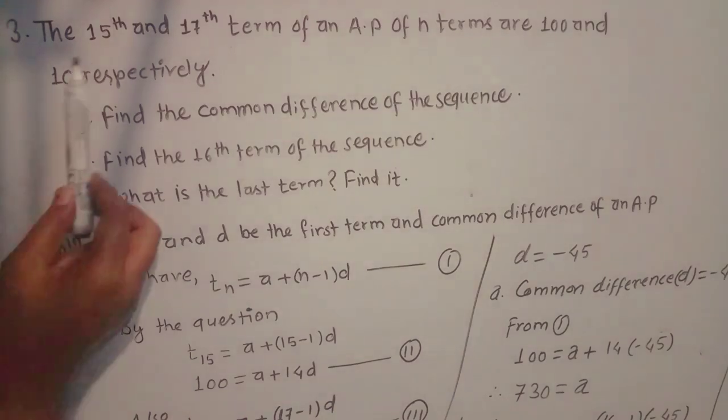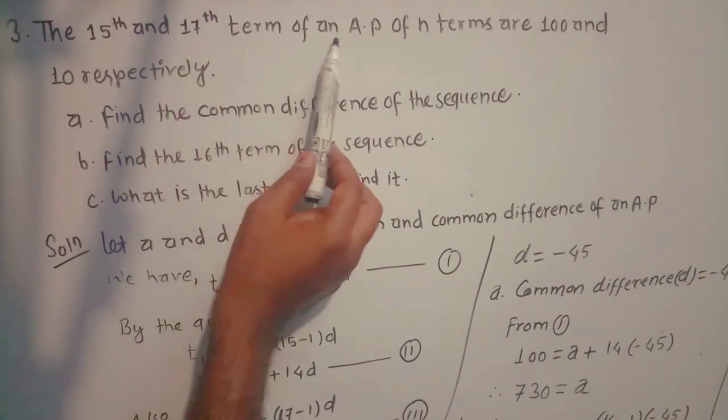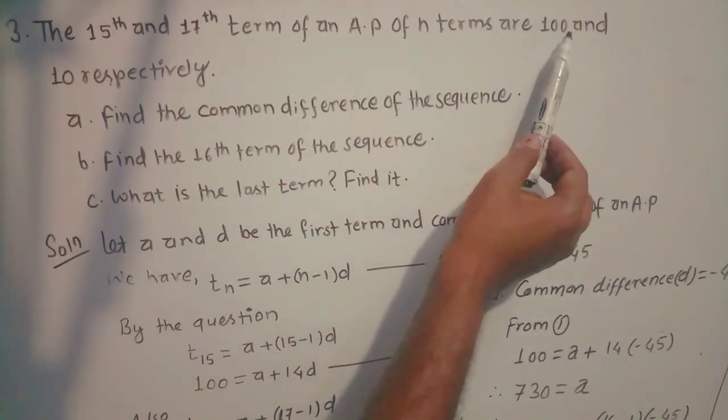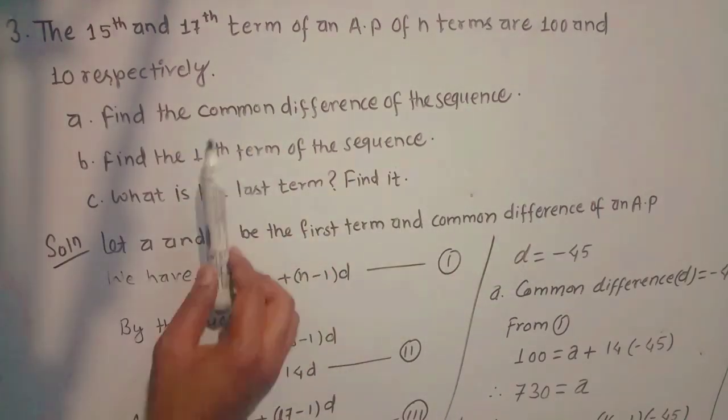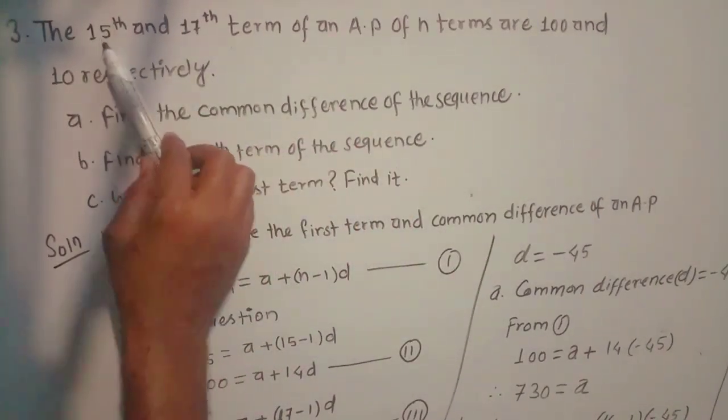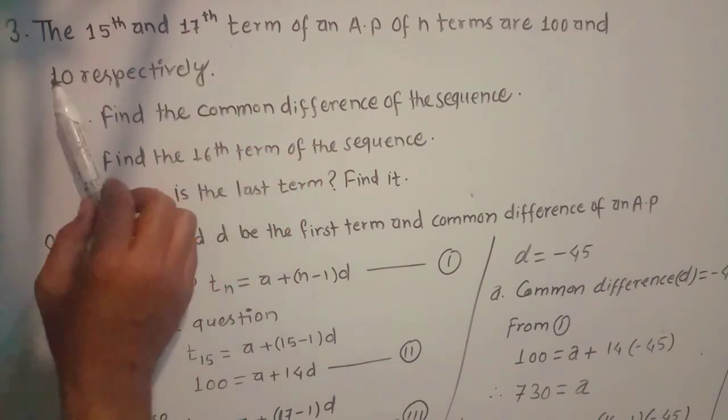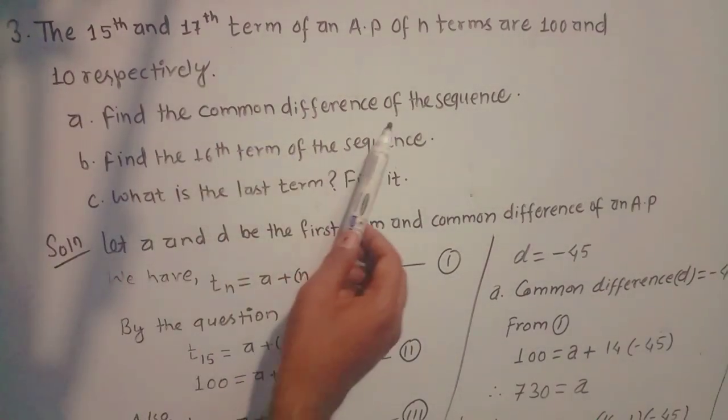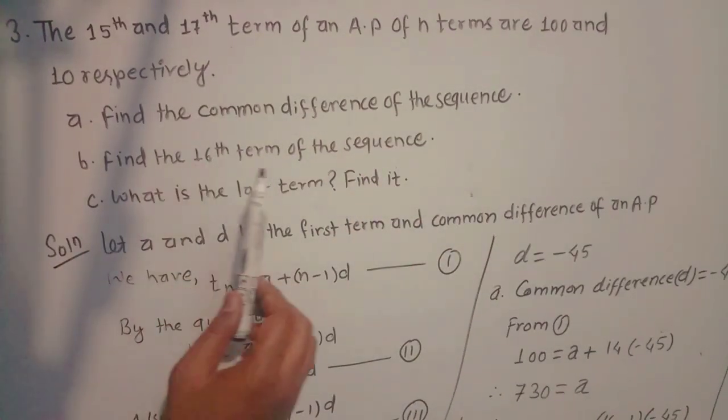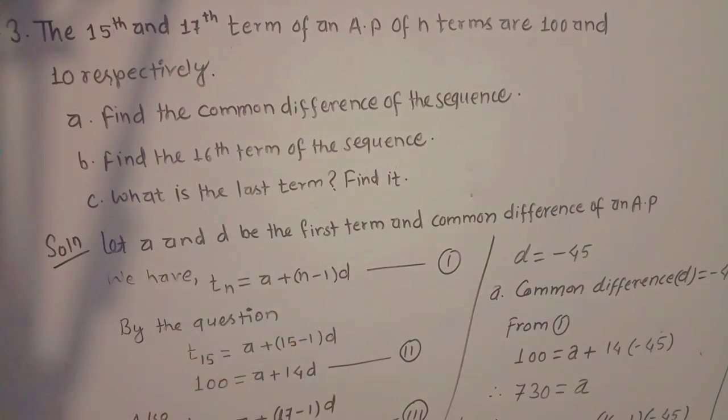Question number 3: The 15th and 17th term of an AP of n terms are 100 and 10 respectively. So arithmetic progression ko 15th term chai 100 chha, 17th term chai 10 chha. Find the common difference of the sequence, find the 16th term of the sequence, and what is the last term.